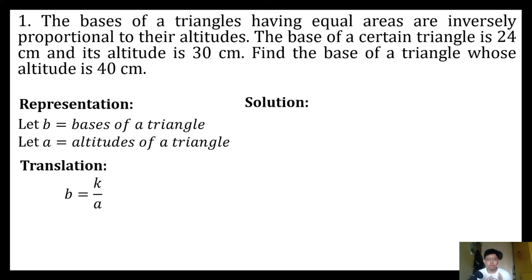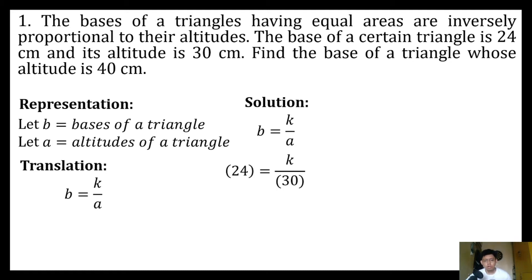Knowing that we have a pair of base and altitude, we need to get our constant of variation in order to find the base of our second triangle. We will use the equation and substitute 24 and 30 as the first pair of our given triangle in order to get the constant of variation.